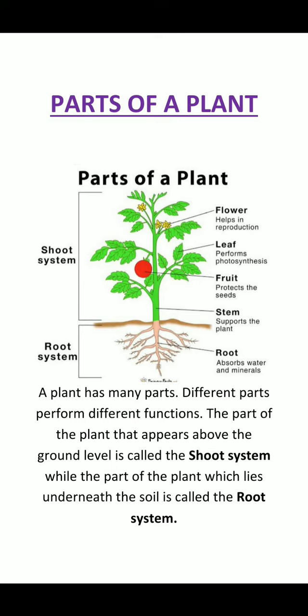So these are the main parts of the plant, which are divided into the root system and the shoot system. The root system includes the root, and the shoot system includes the stem, fruits, leaf, flowers and buds.